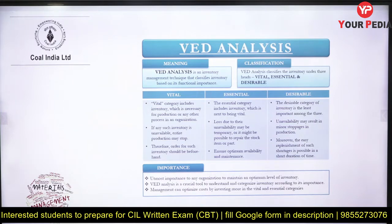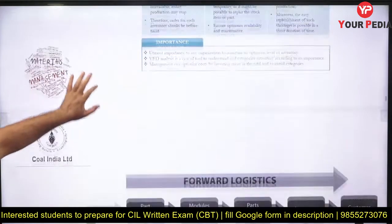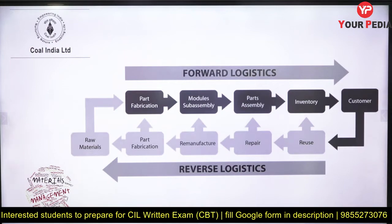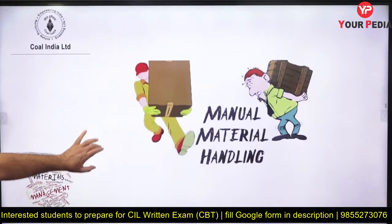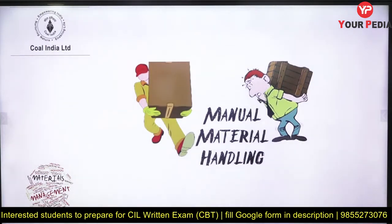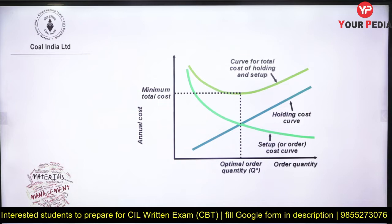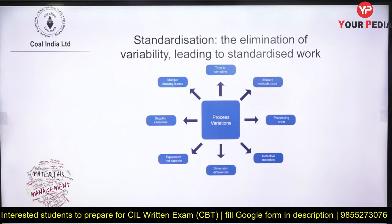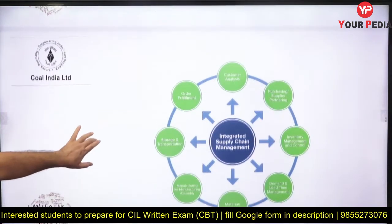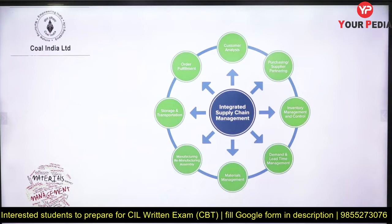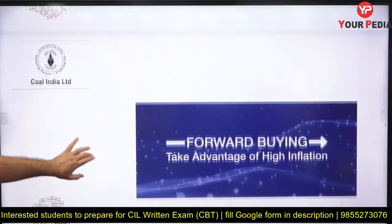In VED analysis: V is Vital, E is Essential, D is Desirable — how we categorize items under VED. Forward and reverse logistics questions have also appeared. Manual vs. automated material handling has been asked — questions about specific manual handling devices. Economic Order Quantity (EOQ): how to calculate optimum EOQ, the two costs involved — ordering cost and setup cost — and how they change with quantity. Standardization versus variability is important: minimizing variability to make work more standardized. Integrated supply chain management — what it means and how it proceeds.